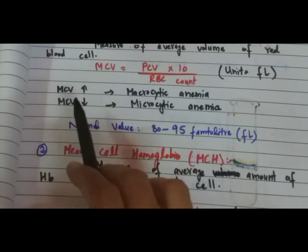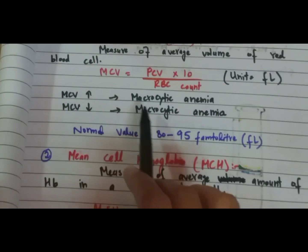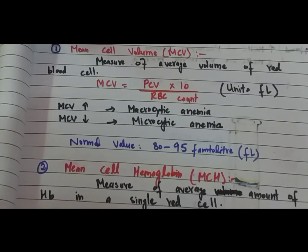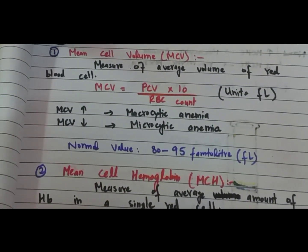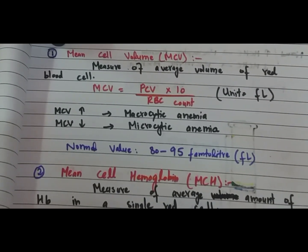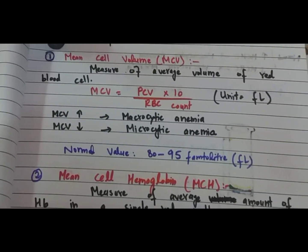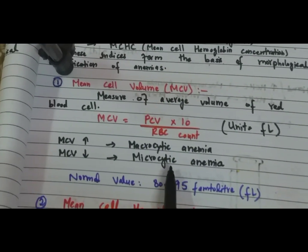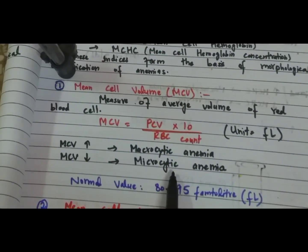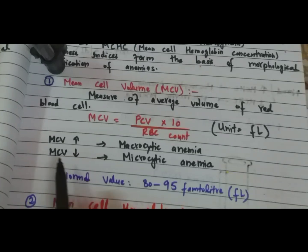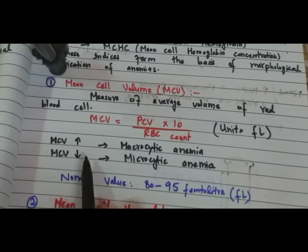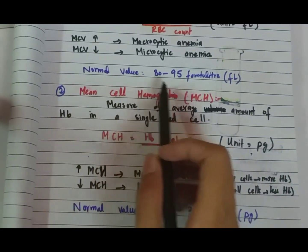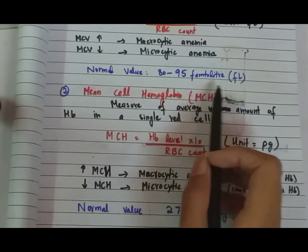If the mean cell volume increases, this is macrocytic anemia. In macrocytic anemia, the RBC count is the same but the cell size is large. In microcytic anemia, the mean cell volume is less. The normal value of MCV is 80 to 95 femtoliters.